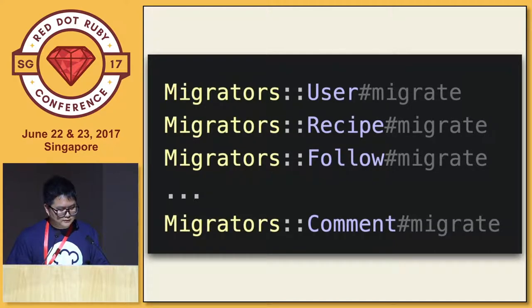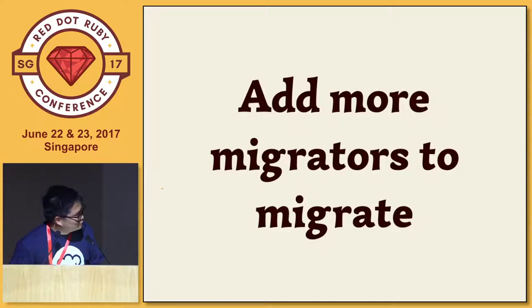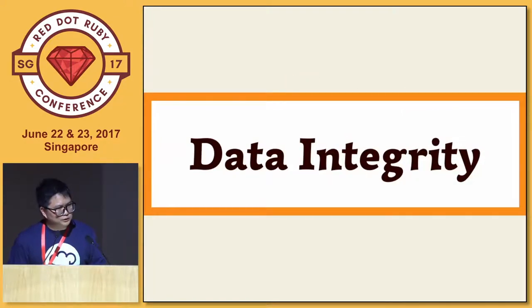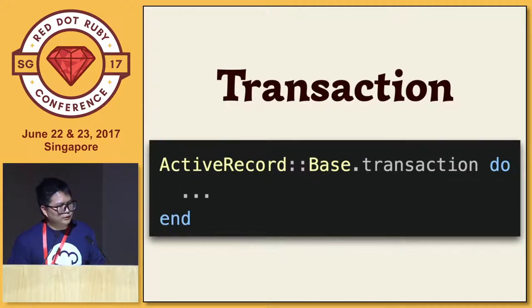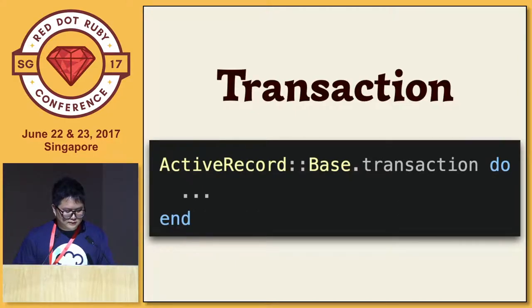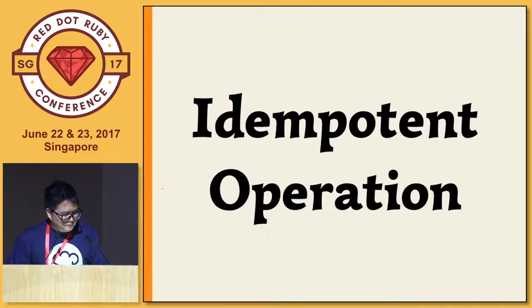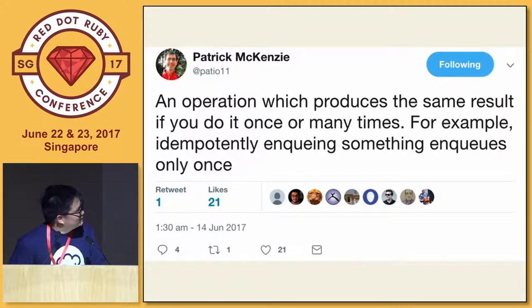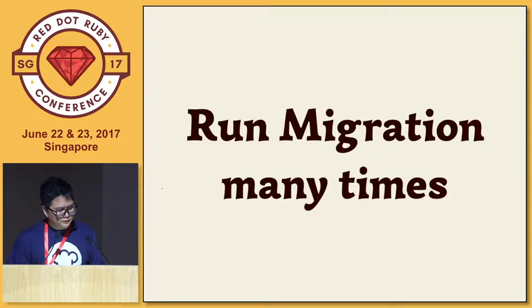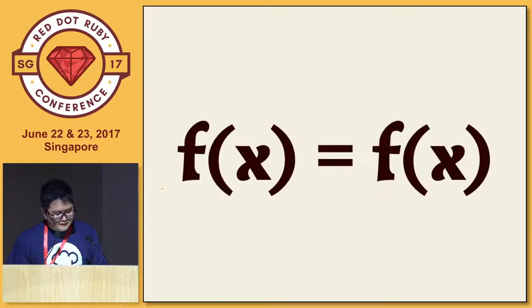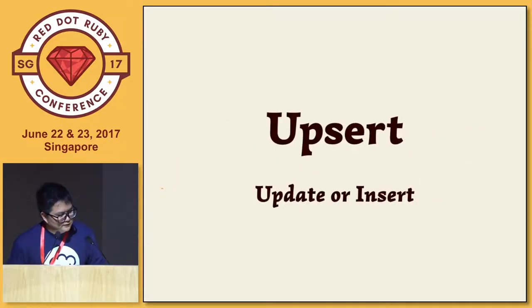All migrators respond to the same interface. I always keep my code simple and stupid. You just keep adding more migrators and your migration is done. For data integrity, the first thing is to wrap all your migration code in a transaction — it also makes code faster because there will be fewer commits to your database.